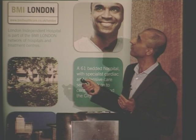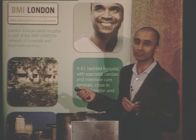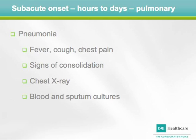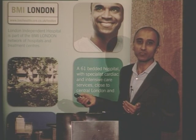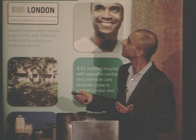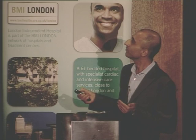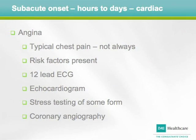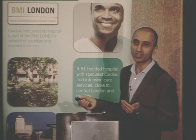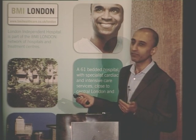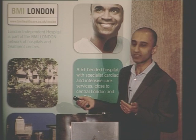A subacute onset of breathlessness develops over hours to days. Pneumonia fits into this category - patients will have fever, cough, and chest pain, with signs of consolidation on auscultation. A chest x-ray and blood and sputum cultures help identify the organism. For cardiac angina, some will present with typical chest pain but not always. Explore classical risk factors for coronary disease. I would do a 12-lead ECG, an echocardiogram, and some form of stress testing - either an exercise test or perfusion scanning - and then coronary angiography if required.